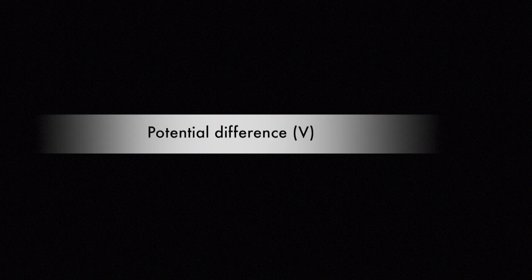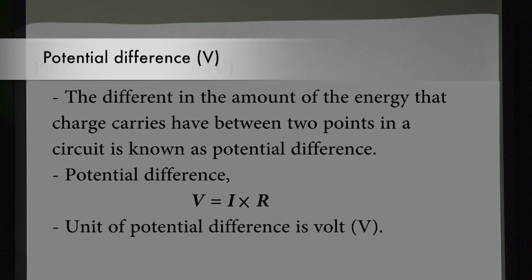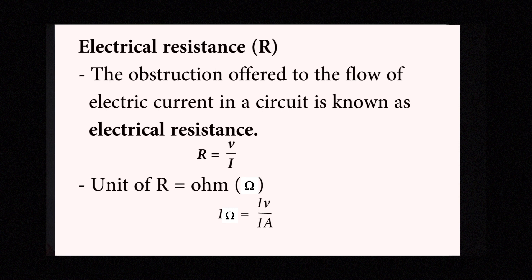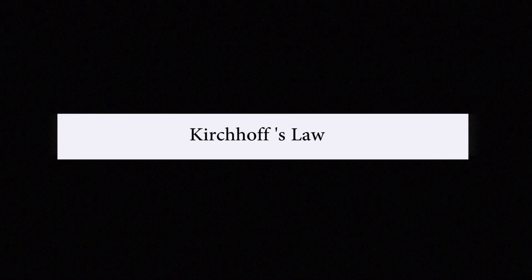Potential difference: the difference in the amount of energy that charge carriers have between two points in a circuit is known as potential difference. It is denoted by capital V and is the product of current and resistance. The unit of potential difference is volt, denoted by capital V. Electrical resistance: the obstruction offered to the flow of electric current in a circuit is known as electrical resistance. It equals potential difference over current. The unit of resistance is ohm. Therefore, 1 ohm equals 1 volt over 1 ampere. Now, with the concepts of electric current, potential difference, and electrical resistance, let us look at Kirchhoff's Laws.